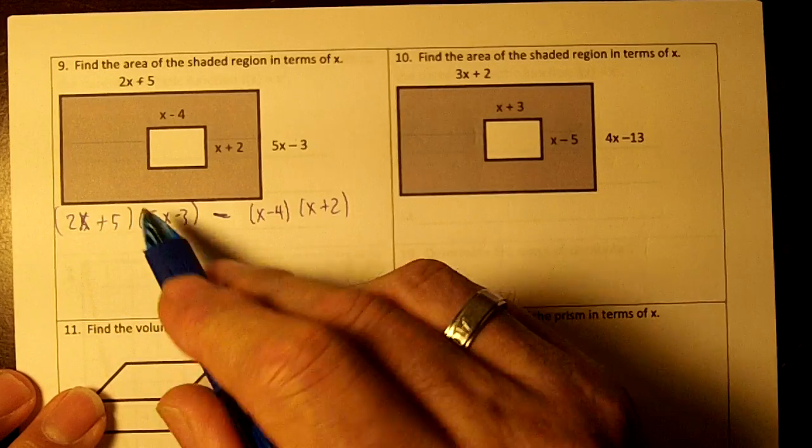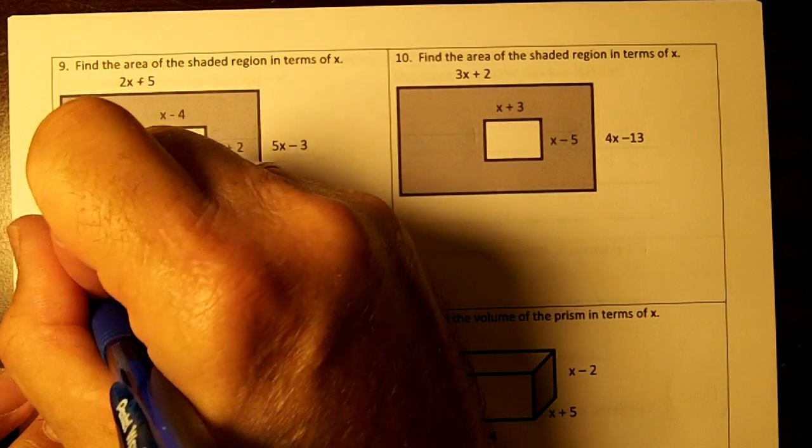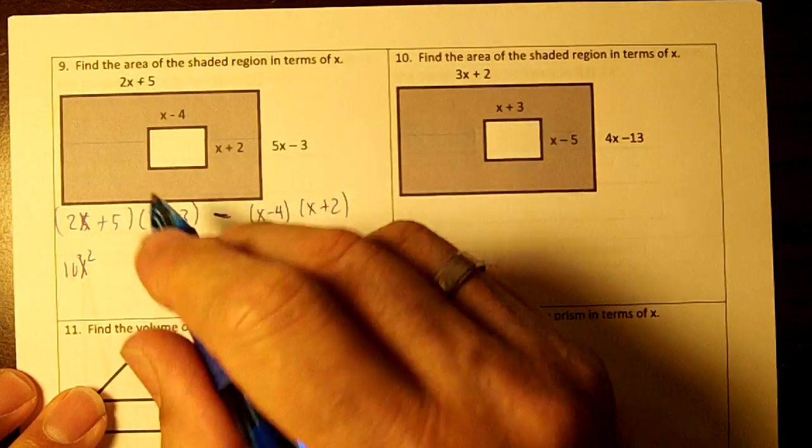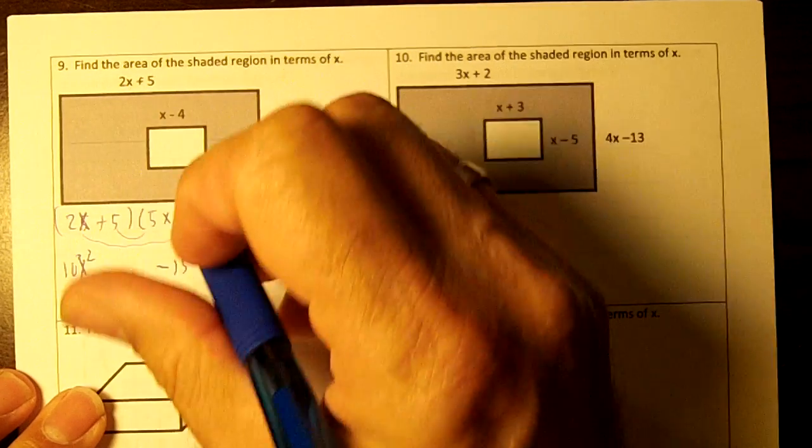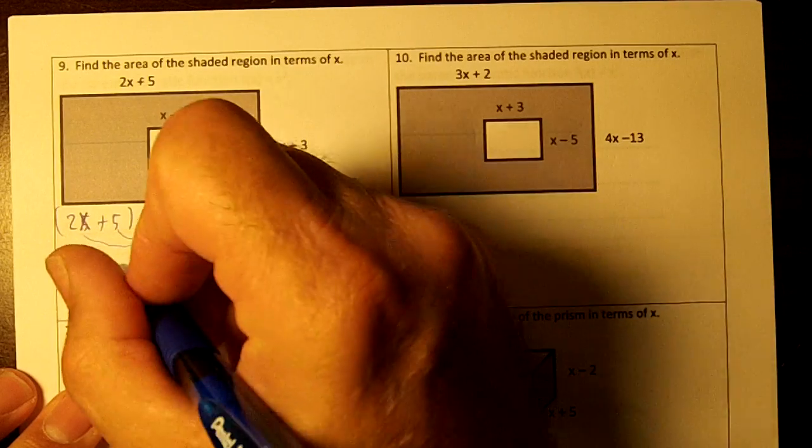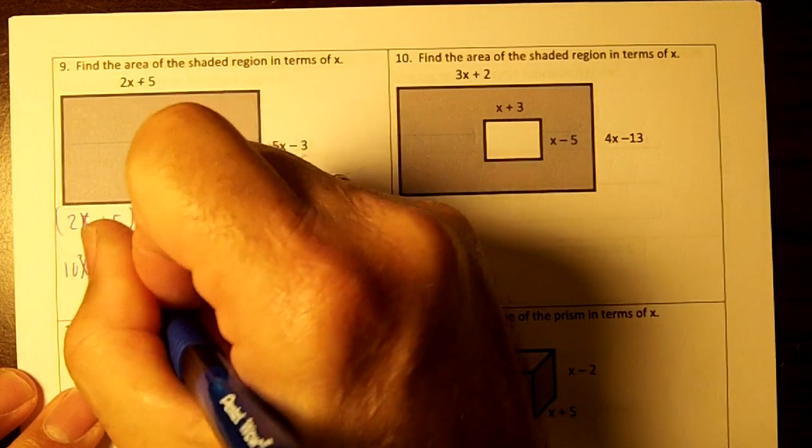Okay, so 2x times 5x is 10x squared. 5 times negative 3 is negative 15, and then draw your arches. That's going to be 25 minus 6, that's plus 19x.